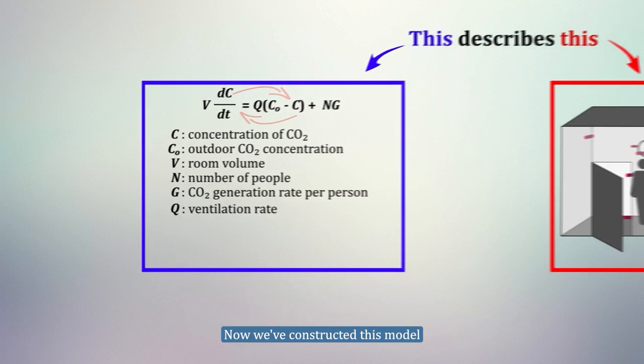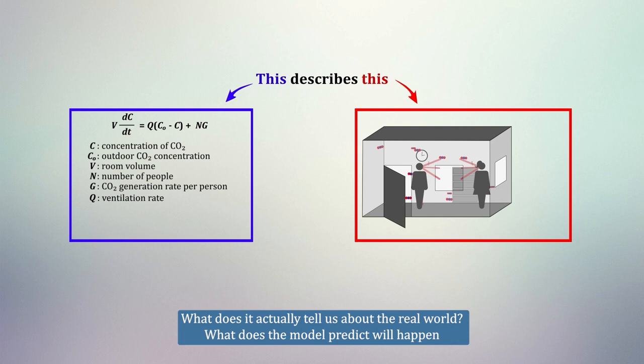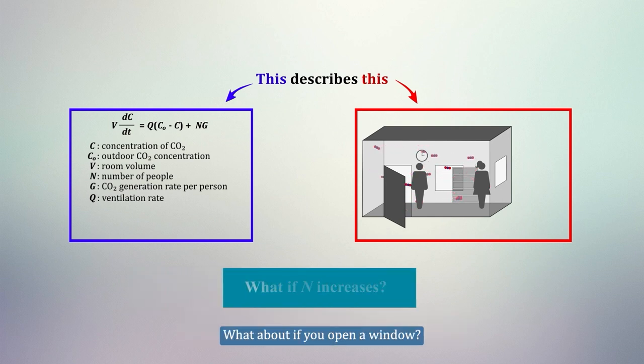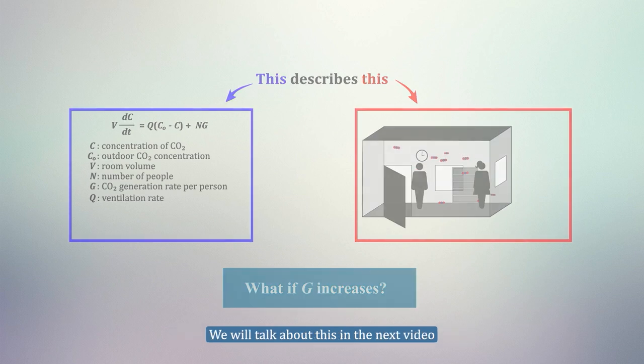Now we have constructed this model. What does it actually tell us about the real world? What does the model predict will happen as more people enter the room? What about if you open a window? What about if you are exercising in the room? And do these model predictions agree with reality? We will talk about this in the next video.